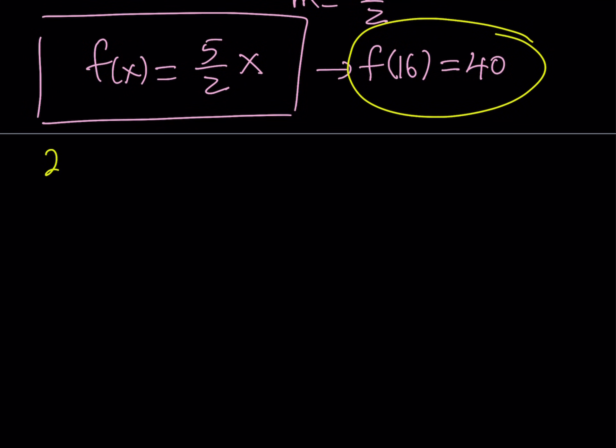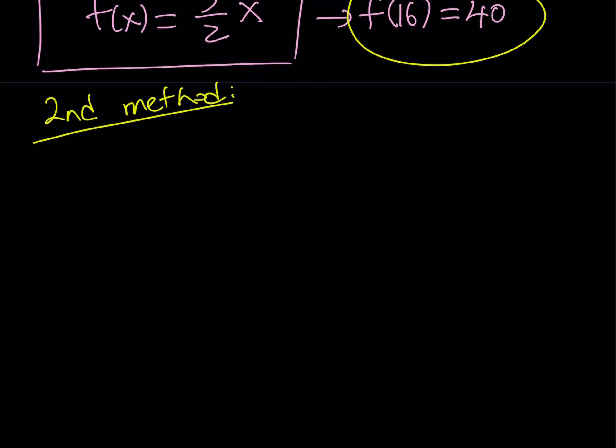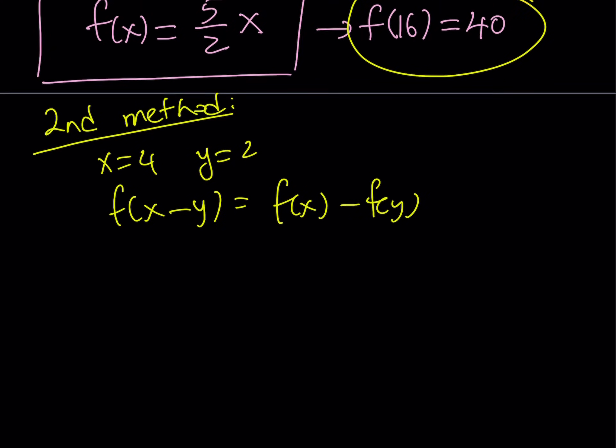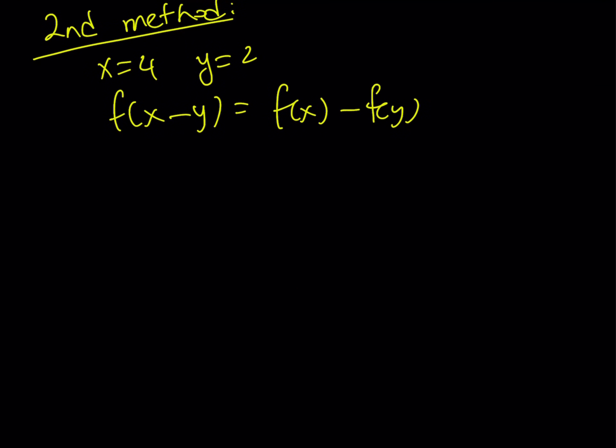Let's go ahead and take a look at the second method. My second method is actually different because I'm not interested in finding a general expression for f, but more like I'm interested in finding numerical values. So here's what I'm going to do. I'm going to replace x with 4 and y with 2. Let's remember our original expression: f(x-y) = f(x) - f(y).